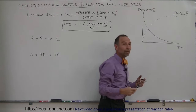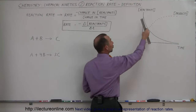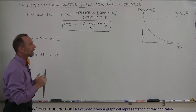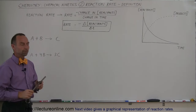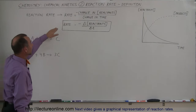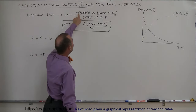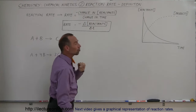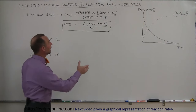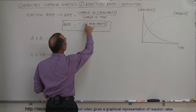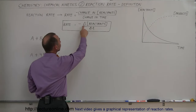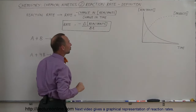So the reaction rate is really represented by the slope of this line. We'll show you in the next video how we calculate that reaction rate by looking at the slope. By definition, the rate is the negative change in the concentration of the reactants — in moles per liter, so that's molarity — divided by the change in time. We use the Greek letter delta to represent change.